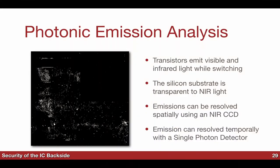In dem Transistor sieht man ungefähr alle 10.000 Schaltvorgänge einen Photon — das heißt, man muss Millionen von Schaltvorgängen machen, bis man etwas sieht. Hier ist ein Chip, der AES implementiert hatte. Wenn man in die untere rechte Ecke schaut: in dieser Region verschwindet der Blob, wenn AES ausgeschaltet wird, und wenn AES angeschaltet wird, sieht man diesen Blob. Ich bin mir ziemlich sicher, dass es AES ist.